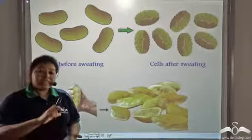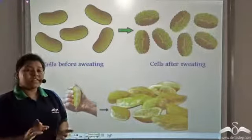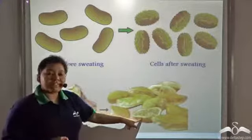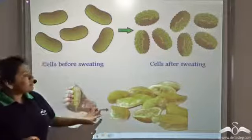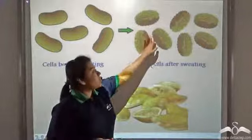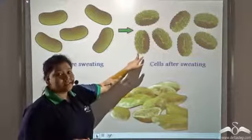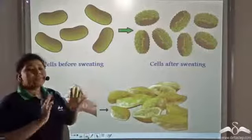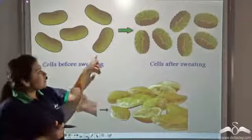When you squeeze an orange, the skin of the orange looks wrinkled and flaccid. Similarly, when we sweat a lot, this is what our cells look like. But before sweating, our cells look swollen or turgid like this.